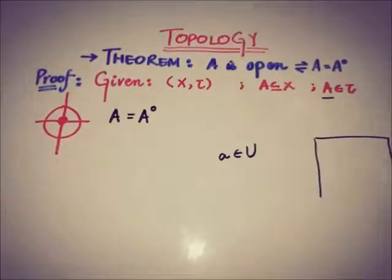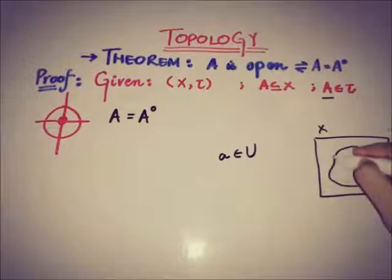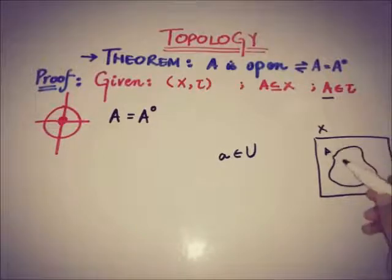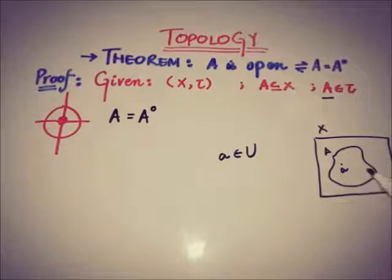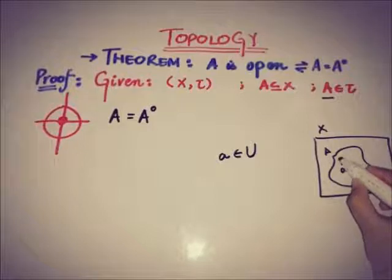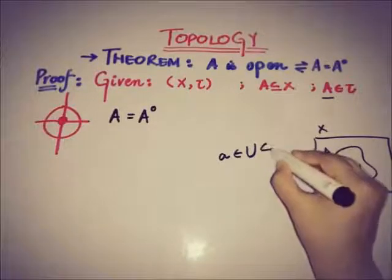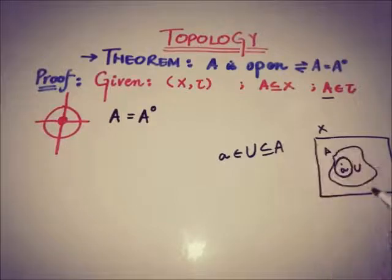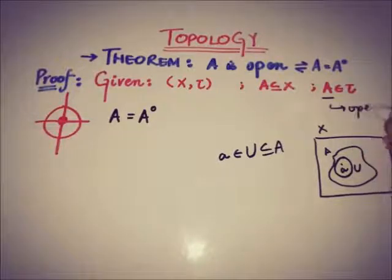Recall that if X is a topological space and A is any subset of X, a point a from A is said to be an interior point of A if there exists an open neighborhood U that contains a and is also a subset of A.